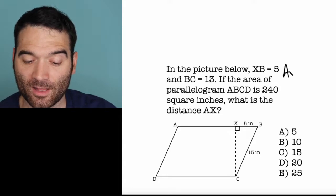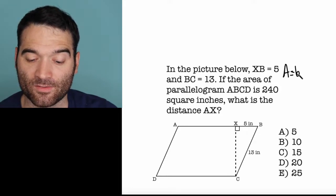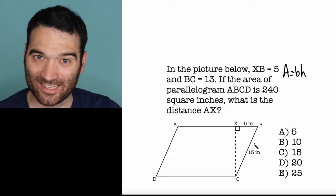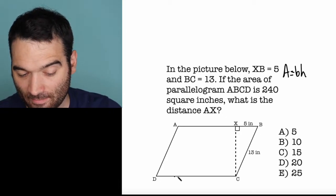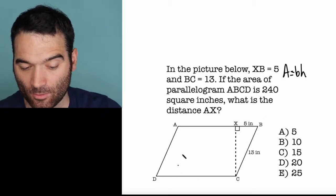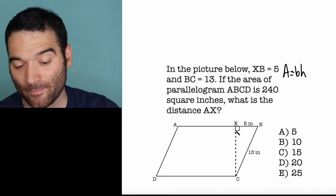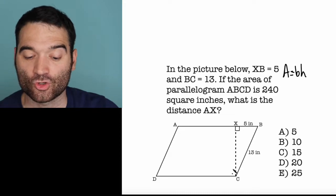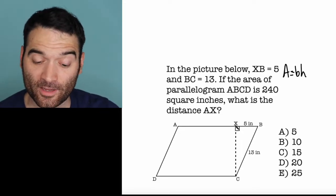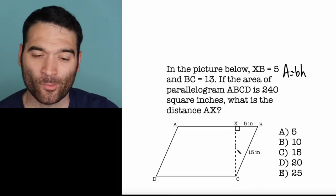The area of a parallelogram is equal to the base of the parallelogram times the height of the parallelogram. That is to say this, the base right here, or that, times, not 13, that's a side, but this line right here, straight up and down. So if we can figure out the distance of this line, then we're on our way to solving this problem.